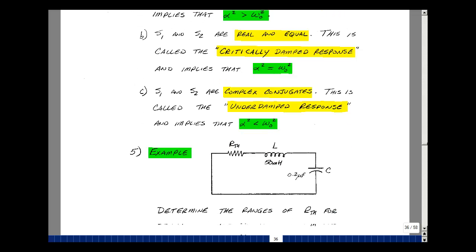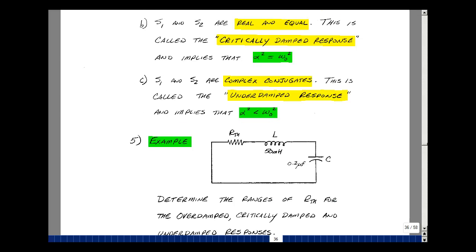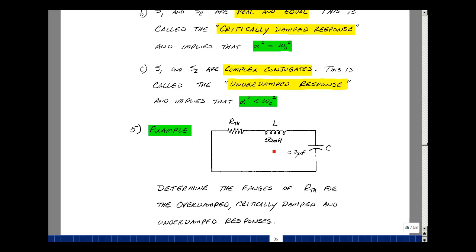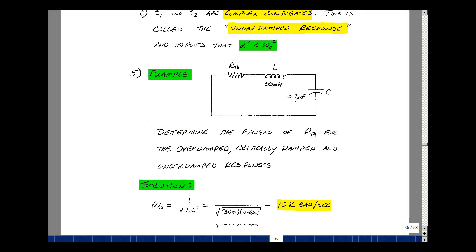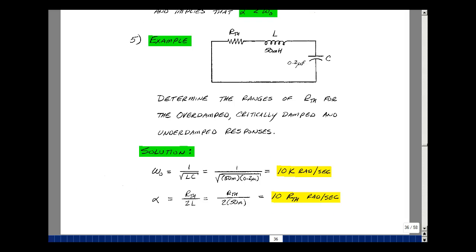Let's take an example with our R, L, and C with no independent sources. Suppose that L is equal to 50 millihenries and C is 0.2 microfarads. Let's figure out the range of values for R thevenin to be over-damped, critically damped, or under-damped. Omega naught is 1 over the square root of LC. So that's 1 over the square root of 50 millihenries times 0.2 microfarads. It turns out to be 10,000 radians per second. Alpha is R thevenin over 2L. We're going to determine R thevenin shortly. And then L is 50 millihenries. So the reciprocal of this is 10 times R thevenin. And this also has units of radians per second.